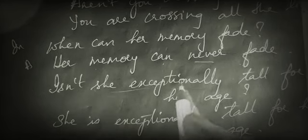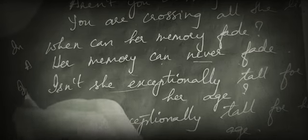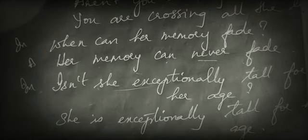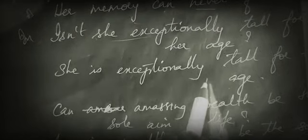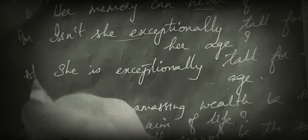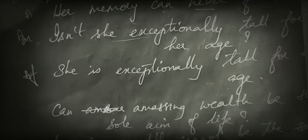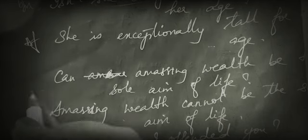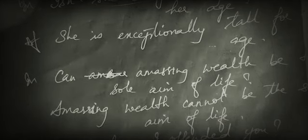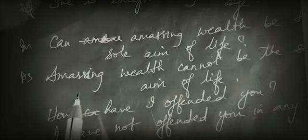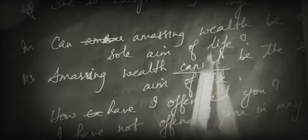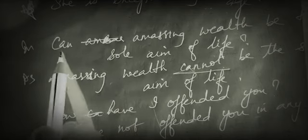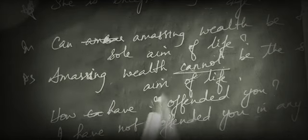'Isn't she exceptionally tall for her age?' changes to the affirmative assertive: 'She is exceptionally tall for her age.' Then 'Can amazing wealth be the sole aim of life?' changes to 'Amazing wealth cannot be the sole aim of life' — the affirmative question becomes a negative statement.